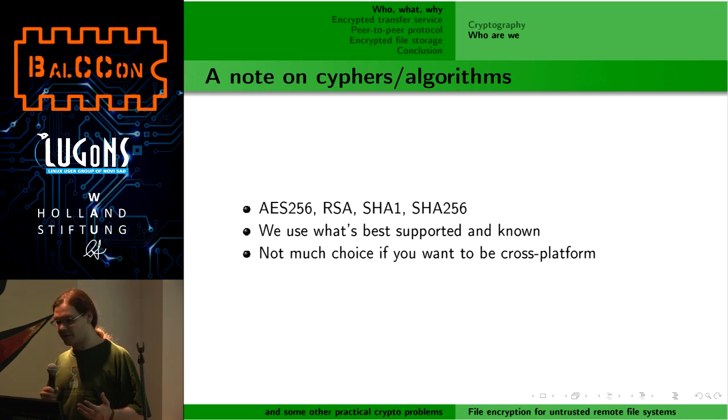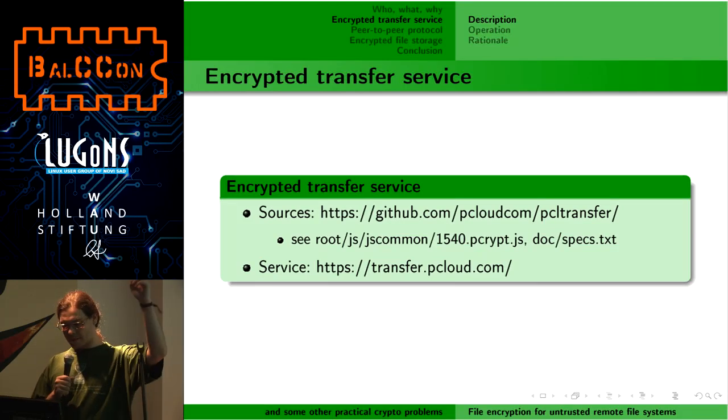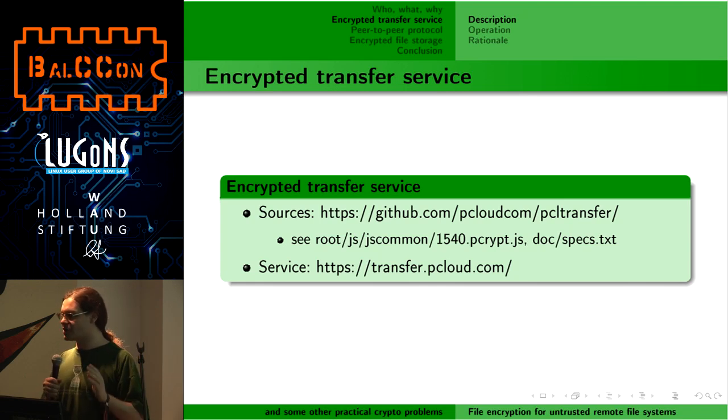We have to be cross-platform and run on a lot of weird devices. There is not much choice — we cannot use Salsa, ChaCha, or similar because they are not available or not implemented in Windows crypto libraries, macOS, or mobile phones. All the source code is publicly available on GitHub and pcloud.com. It's extremely pointless to run a cryptography-based service without providing people the source code to audit, because there is no reason to trust anyone otherwise.